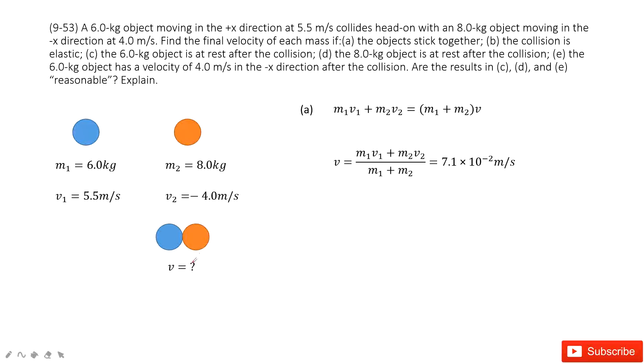The first one is two objects stick together. So in this one, we can see that we consider linear momentum is conserved. Initial momentum equals to the final momentum. Finally, these two objects stick together, so they get the same velocity. So we can get the answer easily.